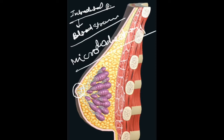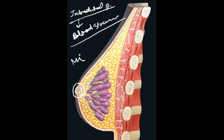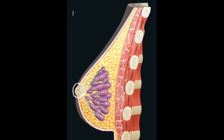What is microdochectomy? In this procedure, the cancerous part along with the affected duct is excised — that is, surgery to remove the affected duct along with the whole tumor.